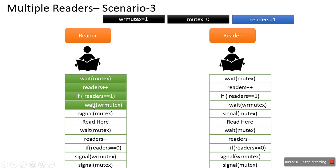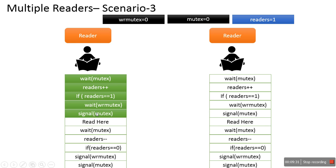Reader1 executes wait(wr_mutex), which decreases the value to 0. Since 0 is not less than 0, it continues. The next instruction calls signal(mutex), which increases the value of the mutex semaphore to 1. Reader1 now starts reading.